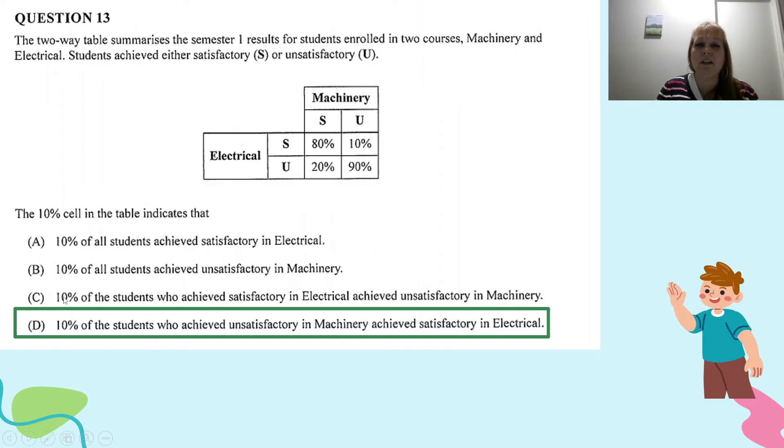If C was going to be correct, it would read differently. And it would have to be that the rows would add up to 100% to be focusing on Electrical and then Machinery. So that's our key trick here, is knowing how to read the two-way table.